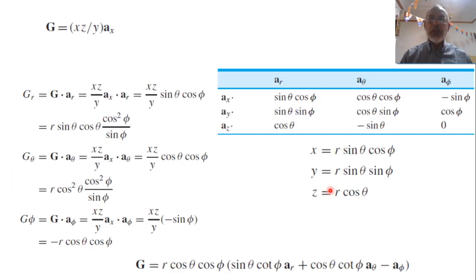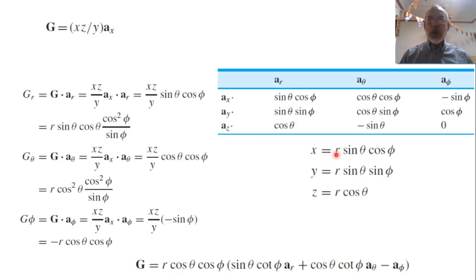As an example, consider a vector G = (xz/y) â_x, and we need to express this vector in spherical coordinates. First, we transform x, z, and y to r, θ, φ: x = r sinθ cosφ, y = r sinθ sinφ, and z = r cosθ.